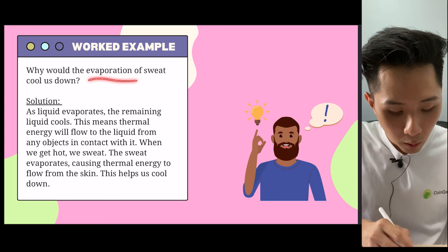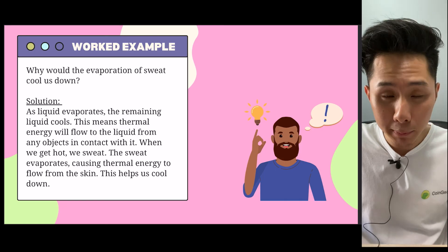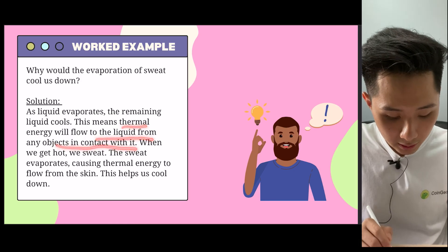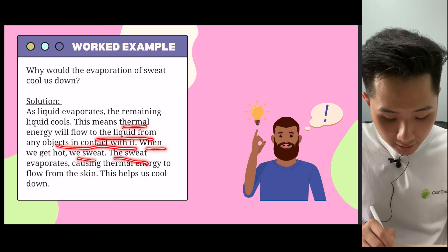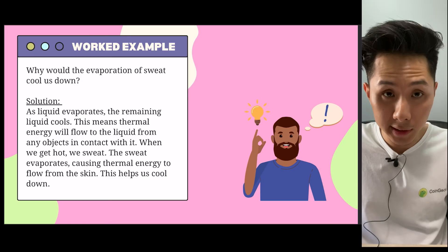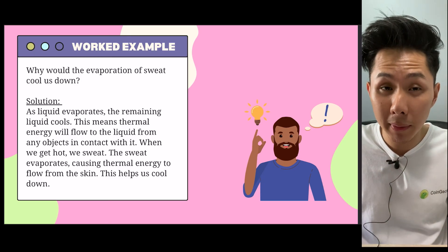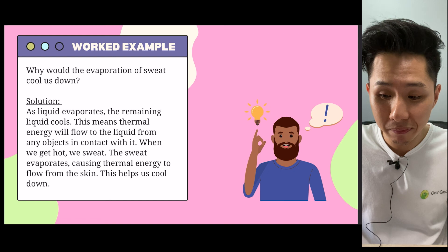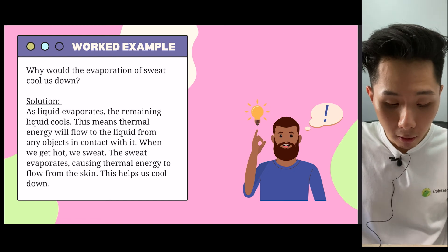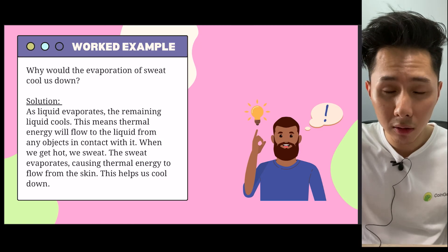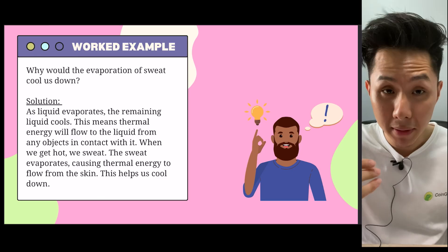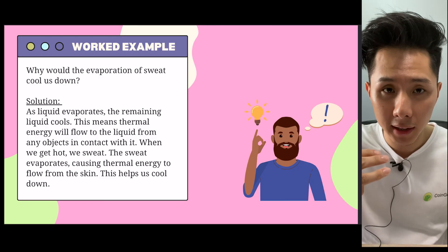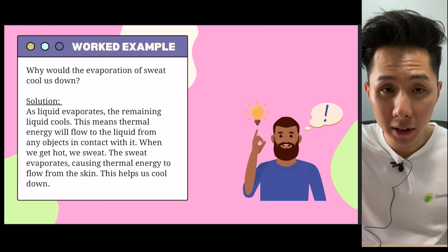Why would the evaporation of sweat cool us down? As liquid evaporates, the remaining liquid cools. This means thermal energy will flow to the liquid from any object in contact with it. When we get hot, we sweat, and the sweat evaporates, causing thermal energy to flow from the skin — thermal energy from our body leaves our body, which helps us to cool down. That's also why we sweat during high-intensity activities. So that's all for this chapter — we studied how the different states of matter react when heated, the difference between evaporation and boiling, and the factors that affect evaporation rate. Thank you for watching — I'll see you in the next video.